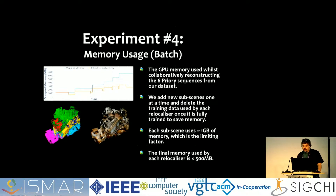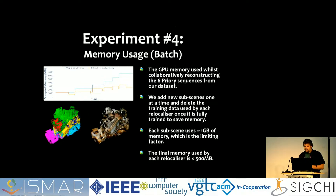The final experiment I want to show relates to the amount of GPU memory our approach uses. To evaluate this, we performed a collaborative reconstruction of the six sequences in the priory subset of our dataset, which refers to a three-story house, and examined how much memory was being used both for the sub-scenes themselves and for the local re-localizers. To minimize memory usage, we added new sub-scenes one at a time and deleted the training data used by each local re-localizer once fully trained. We found that each sub-scene used around 1 gigabyte of memory, making that the limiting factor in practice. The local re-localizers were smaller — only about 500 megabytes — particularly once we deleted the training data.